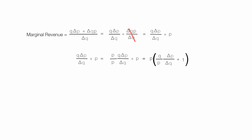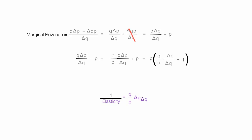I'll tidy up the equation and slide the Q over. Elasticity is equal to price divided by quantity times the change in quantity divided by the change in price. That turns out to be the inverse of the fraction, so swapping top and bottom gives 1 divided by elasticity. So the expression becomes price times 1 over E plus 1, which equals marginal revenue.